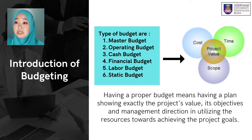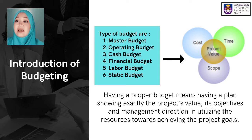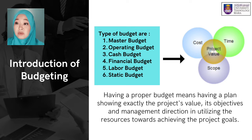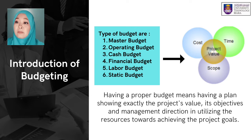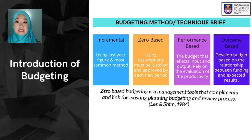In a project, the values to achieve efficiency and effectiveness — time, cost and scope of work — are three major elements. Having a proper budget means having a plan showing exactly the project value, its objective, and management direction in utilizing resources towards achieving the project goals and values.